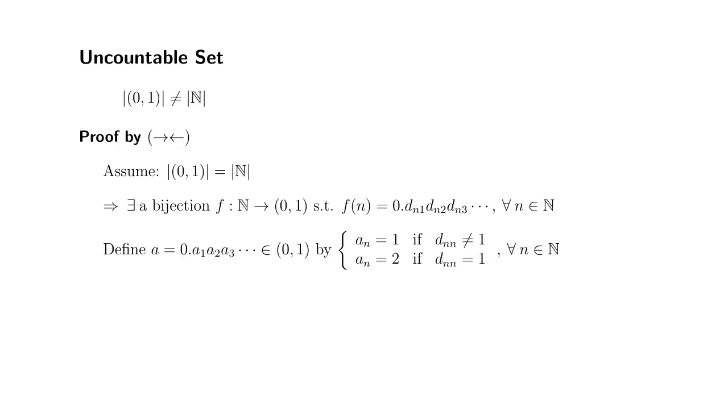Therefore, we know that f does not hit a. So a is not in the image of the set of natural numbers under f. So f is not onto because f misses a, which is a contradiction because f is supposed to be a bijection, which is one-to-one and onto.